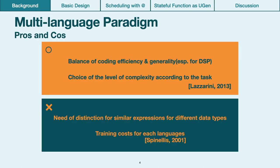Using multiple languages maintains a balance between coding efficiency and generality of possible expressions. Additionally, it allows the user to choose the level of complexity according to the task.